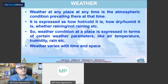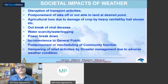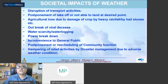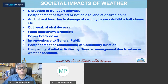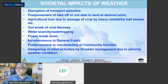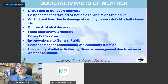Mathematically, we express it by saying that weather is a function of longitude, latitude, altitude, and time. Weather has significant societal impacts. A few of them listed here include: transport activities disruption, postponement of takeoff or landing of aircraft, agricultural loss due to heavy rainfall or hailstorms, viral disease outbreak, water scarcity, water logging, power breakdown, postponement or scheduling of community functions, and hampering of relief activities by authorities due to adverse weather conditions, which happened during the Amphan period.